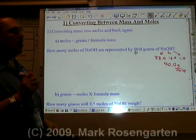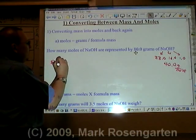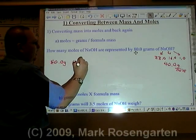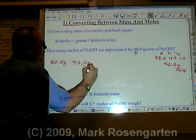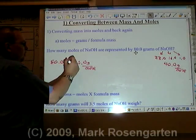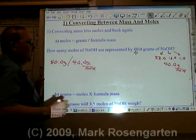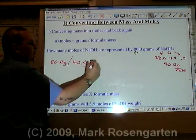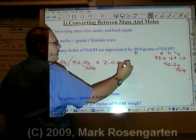Well, we let the units solve the problems for us. We have 80.0 grams, and we have 40.0 grams per mole. How do we cancel out grams and be left with moles? Division. Division will cancel out the grams and leave us with moles, 2.00 moles.